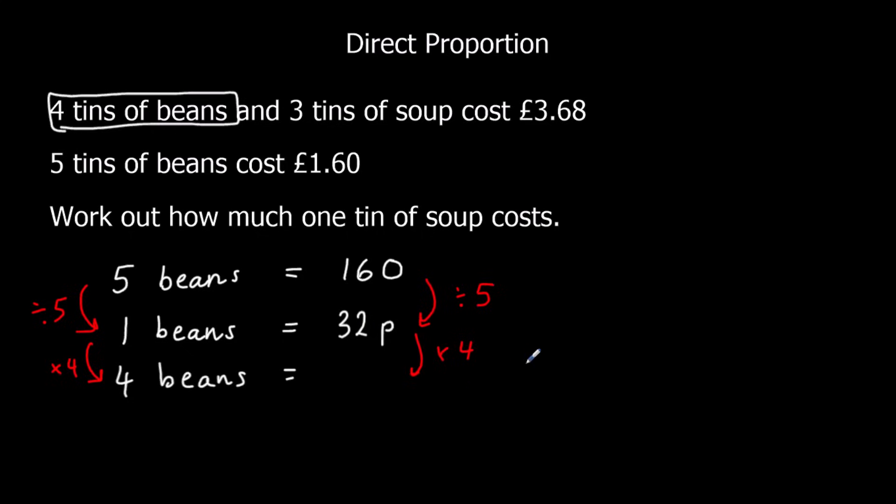So to multiply by 4 I'm going to double then double again. So double 1 is 64, double 64 is 128p. So 4 tins of beans, that's £1.28 or 128p.